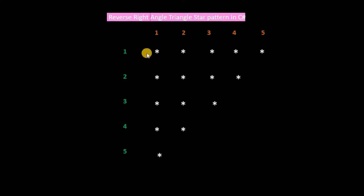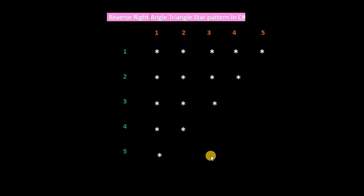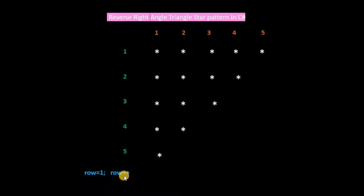Row starts from 1 and increments till 5. So in the outer for loop of row, row is equal to 1 and row plus plus.